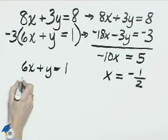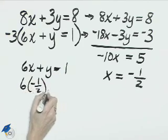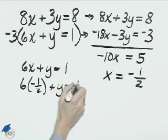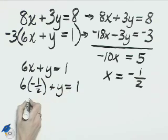So in place of x will be negative 1 half plus y equals 1. 6 times negative 1 half is negative 3.